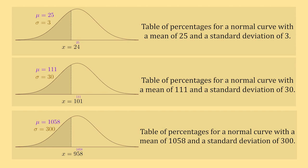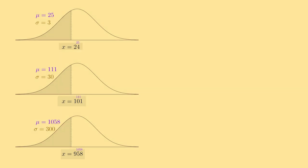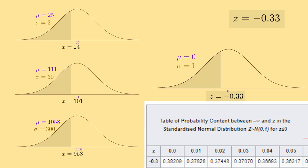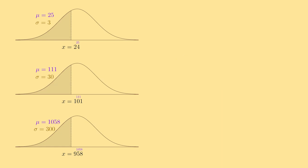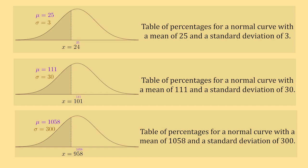It is much easier to translate any point from any normal curve to the standard normal curve using a z-score and then using the z-table than it is to produce a unique table for every possible combination of means and standard deviations.